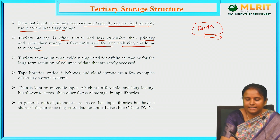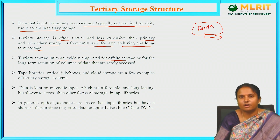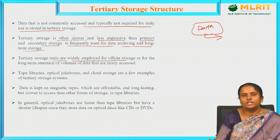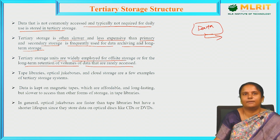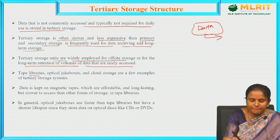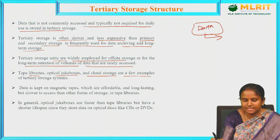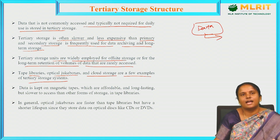Tertiary storage units are widely employed for off-site storage and for the long-term retention of volumes of data that are rarely accessed. Tape libraries, optical jukeboxes, and cloud storage are a few examples of tertiary storage systems.